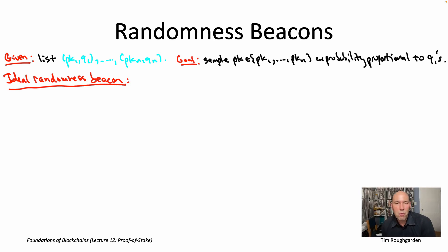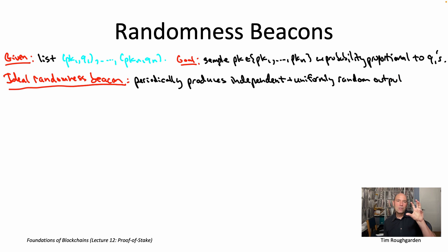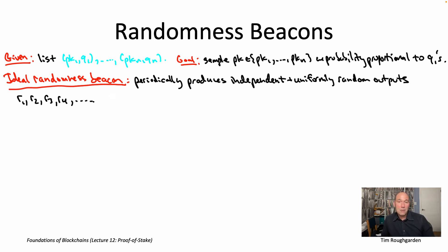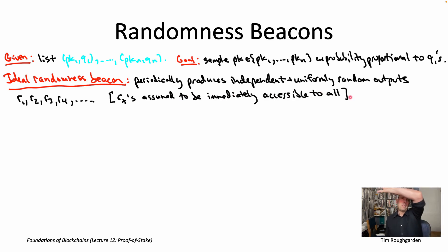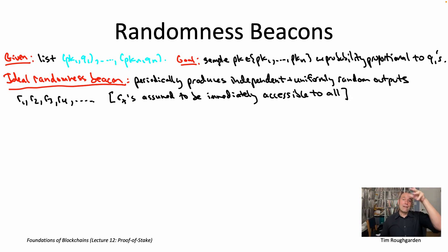Slightly more formally, we can think of a randomness beacon as a box which periodically — say, once a second or once every 10 seconds — emits perfect randomness. For example, each output of a randomness beacon might be a 256-bit string, a string of 256 zeros and ones. For an ideal randomness beacon, that's going to be equally likely to be any of the 2^256 possible 256-bit strings. Part of that definition is that this randomness is common knowledge — almost like a plane flying in the sky with the 256-bit number trailing behind it and everybody can see it.